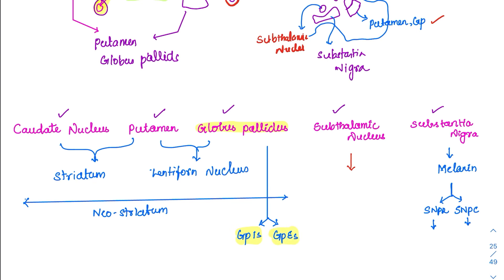An important MCQ about the subthalamic nucleus: it is the only excitatory output from the entire basal ganglia. All the interconnections in the basal ganglia, the subthalamic nucleus is the only one giving excitatory output — only excitatory fibers come from there. The excitatory neurotransmitter here is glutamate.